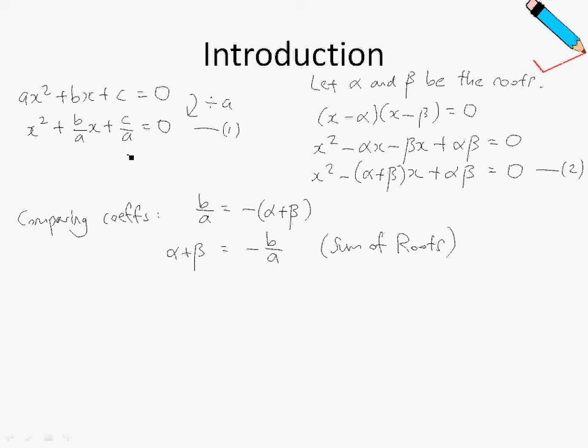Comparing the coefficients of the constant term, I realize that c over a is equals to alpha beta. So I can also write alpha beta equals to c over a. And this is known as the product of roots.